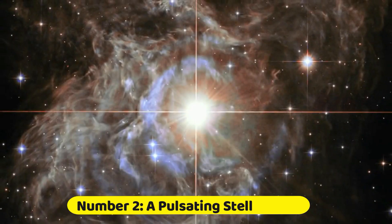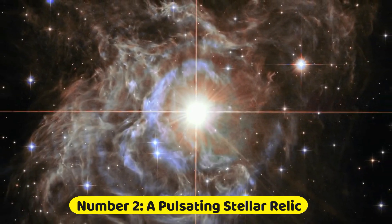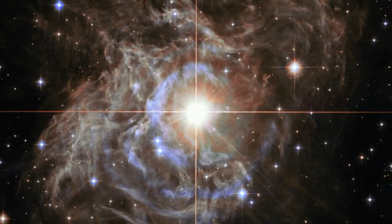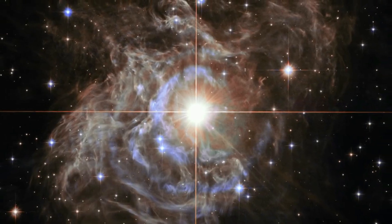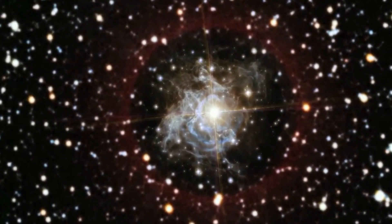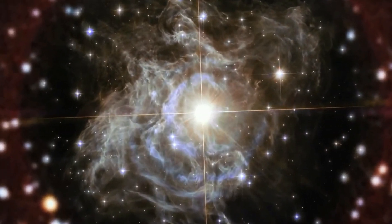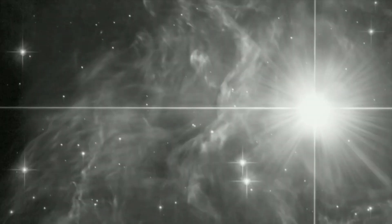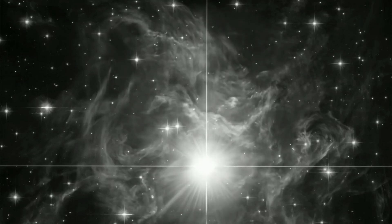Number 2. A Pulsating Stellar Relic. This breathtaking image captured by the James Webb Space Telescope unveils the planetary nebula NGC 2452 located in the southern constellation. The remains of the celestial body responsible for the birth of this nebula can be observed at the heart of the azure formation.